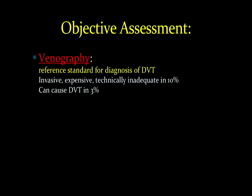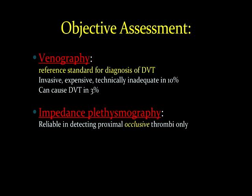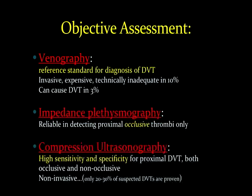The objective assessment of deep venous thrombosis is as follows. Venography is considered the gold or reference standard for the diagnosis of DVT; however, this is invasive, expensive, and fairly uncommon. We can also use impedance plethysmography, but this is only reliable in detecting proximal occlusive thrombosis. Compression ultrasonography, which is the focus of our discussion today, has a high sensitivity and specificity for proximal DVT, both of the occlusive and non-occlusive nature, and is a non-invasive test that's relatively inexpensive.